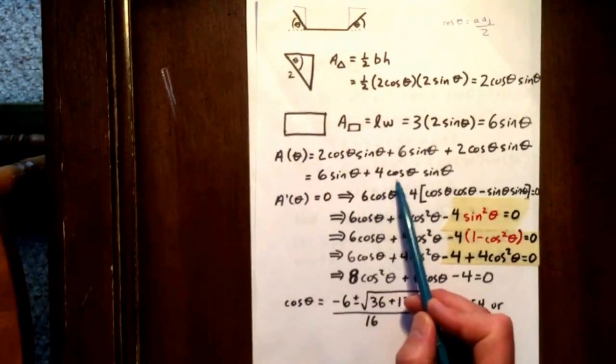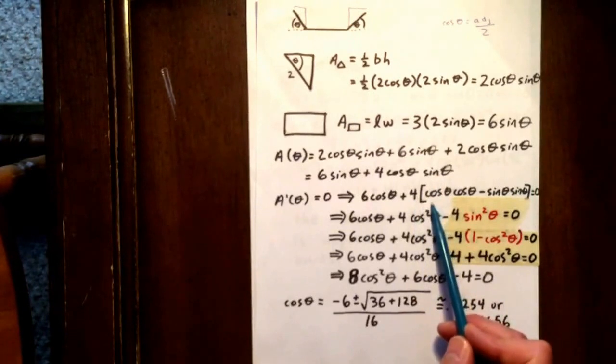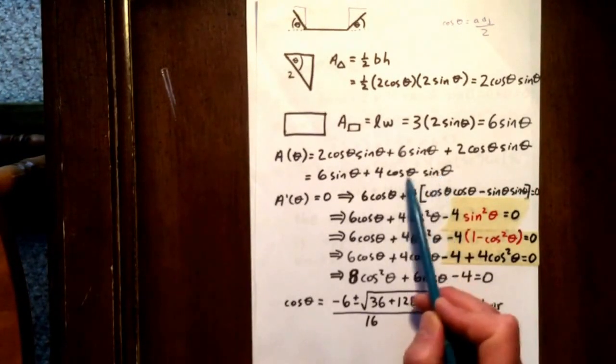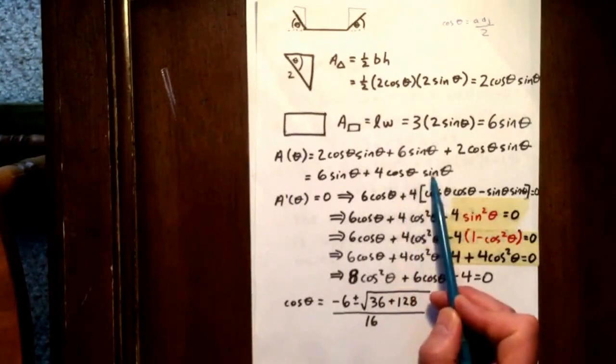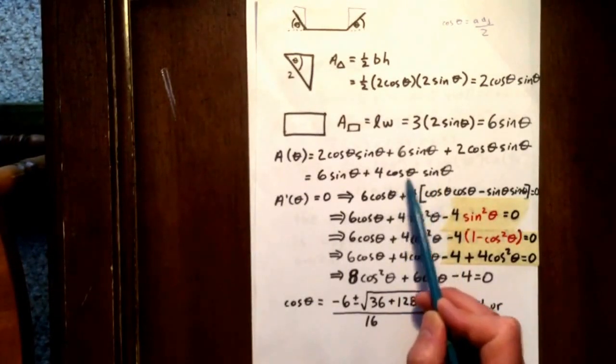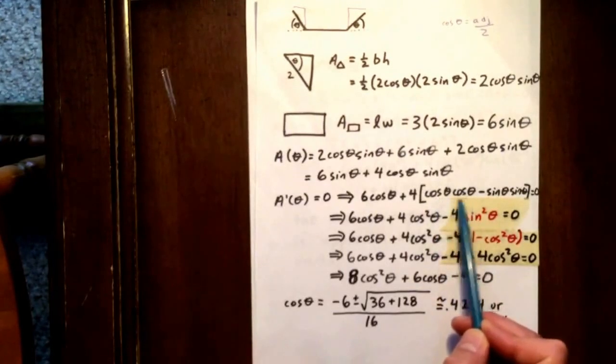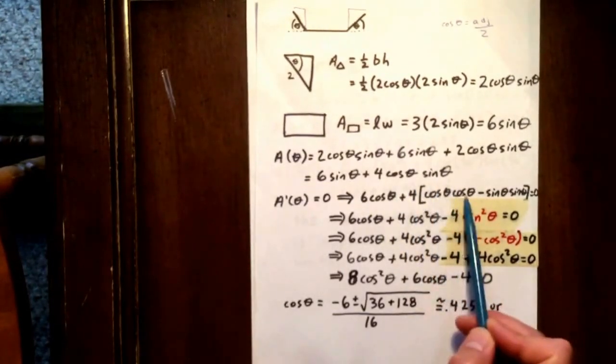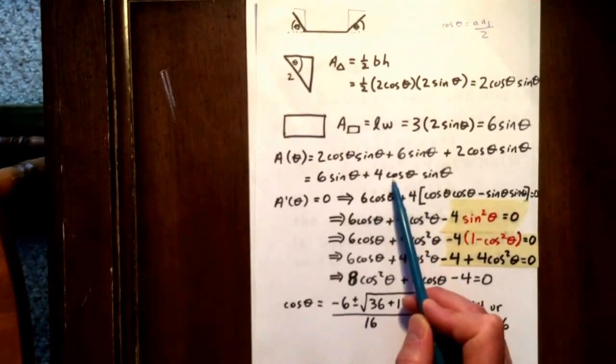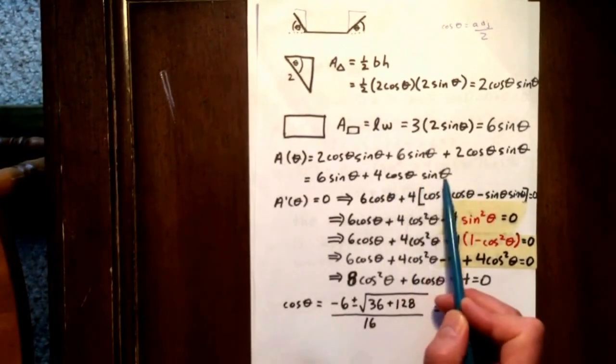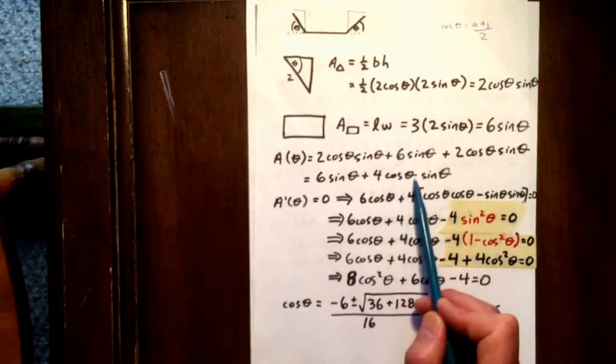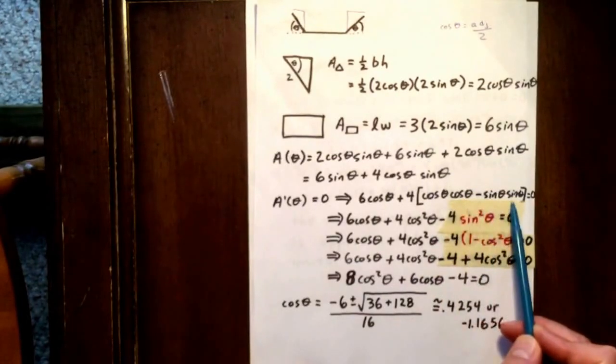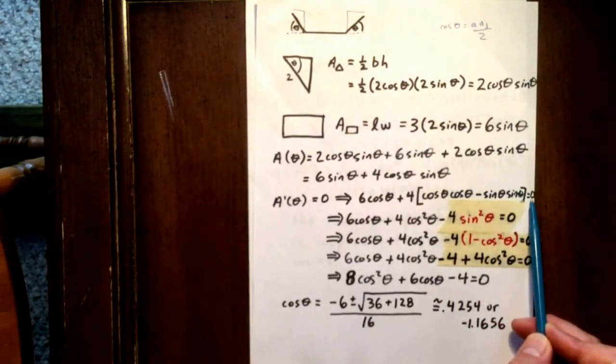The derivative of 4 cos theta sine theta is 4 times the first times derivative of the second. So cos theta times the derivative of sine theta, which is cos theta. Plus, the derivative of the first times the second. The derivative of cos theta is negative sine theta. So we have negative sine theta times sine theta. And we're going to set that whole derivative equal to 0.